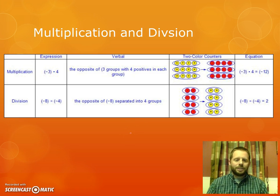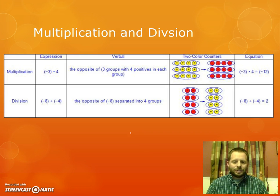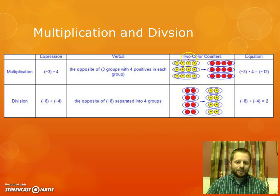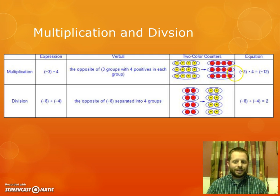Now let's look at multiplication and division. Here you have the multiplication problem negative 3 times positive 4. Verbally, what is that saying? Well, remember the negative sign just means opposite, right? So we're saying the opposite of 3 groups with 4 positives in each group. Because remember, multiplication is just groups, right? So this is saying the opposite of 3 groups with 4 positives in each group. Well, start by making 4 positives in 3 groups and then find the opposite of that. So change it from positives to negatives. So negative 3 times positive 4 would equal negative 12.